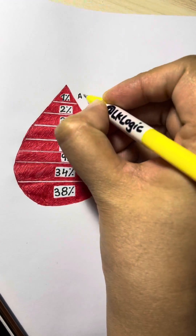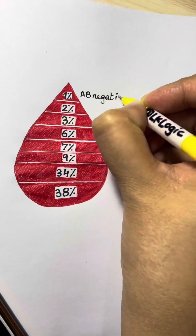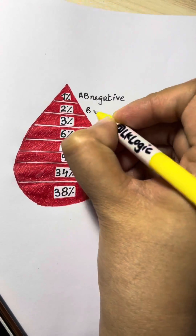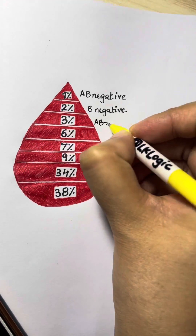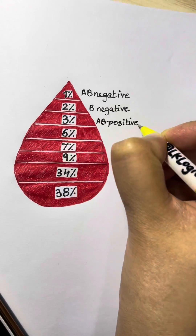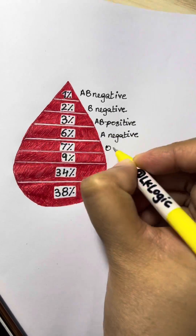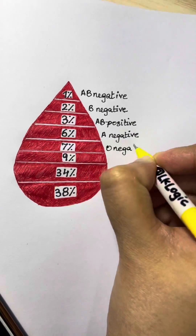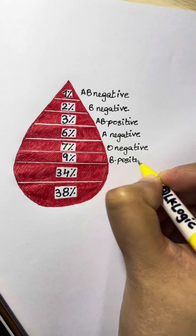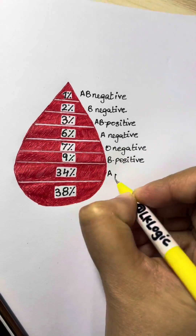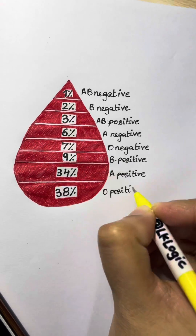Blood type prevalence: 1% AB negative, 2% B negative, 3% AB positive, 6% A negative, 7% O negative, 9% B positive, 34% A positive, and 38% O positive.